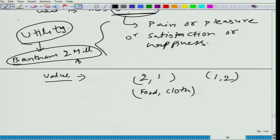If you have these two options available, two units of food and one unit of cloth versus the other bundle which has one unit of food and two units of cloth.